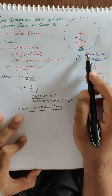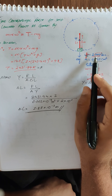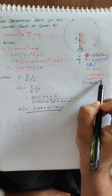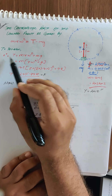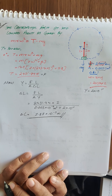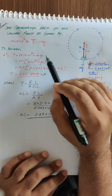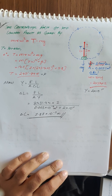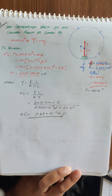So the change in length (elongation) is 1.87 × 10⁻³ m. To summarize: the 2 revolutions per second is angular frequency, so ω = 2πf. From that we get tension, then use Young's modulus to get ΔL. We will stop the lecture here; remaining questions will be solved in the next lecture. Bye, take care.